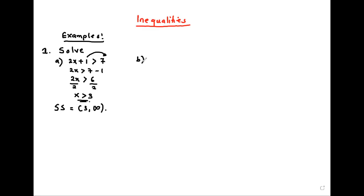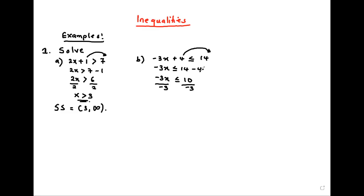Another one: negative 3x + 4 is less than or equal to 14. You take this number to the other side, so you have negative 3x less than or equal to 14 minus 4. That is negative 3x less than or equal to 10. Divide by negative 3, divide by negative 3. So x is greater than or equal to negative 10 over 3. The rule is that whenever you divide or multiply by a negative across the inequality, the inequality will change its direction.